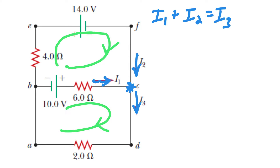Notice you do have options — there's one big giant loop all the way on the outside that you could also choose. But you just have to make sure that you have enough loops to cover every single element in the circuit. With these two on the inside we have plenty. The loop law is basically saying that the voltage around a closed loop should equal zero.